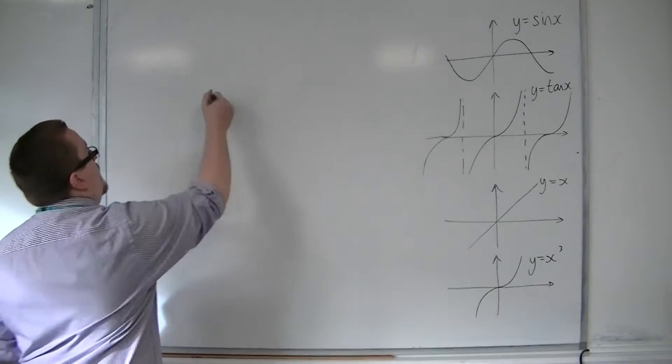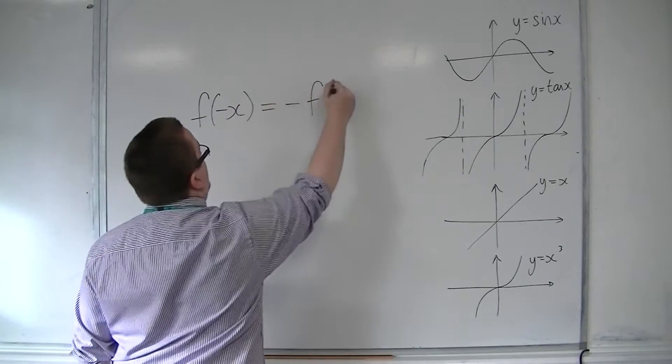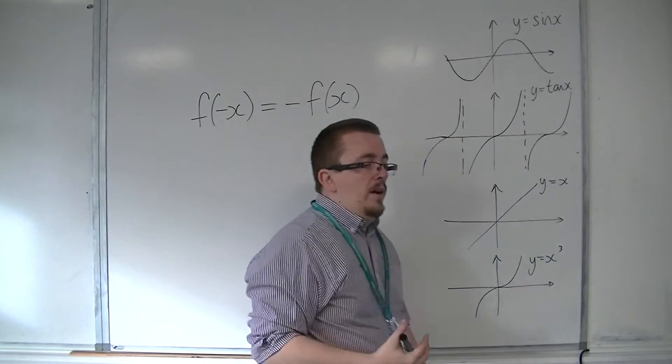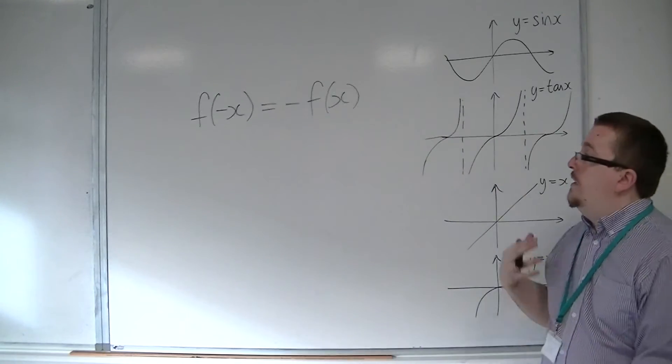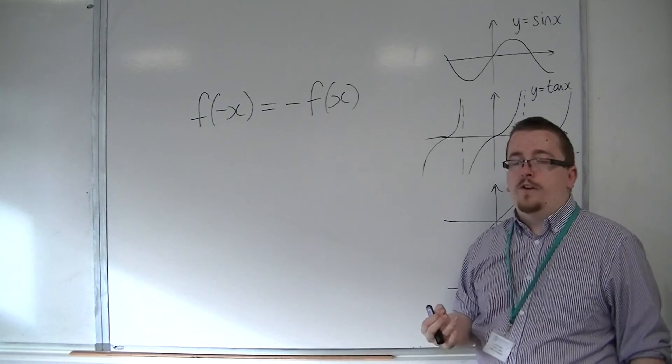Subsequently, what we find is that f of minus x is equal to minus f of x. So in a similar fashion to how we did it with even functions, we now have this rule for odd functions.